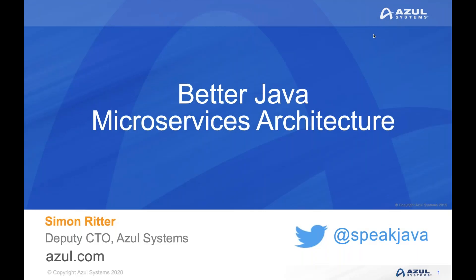Welcome to this webinar. What we're going to do in this session is talk about the idea of microservices — the architecture we use when developing applications using microservices, and specifically what we can do when using Java to deliver some or all of those services. We'll look at challenges in terms of how to architect the application, address performance requirements, and look at what we at Azul do with the Zing JVM and how that fits into the whole picture.